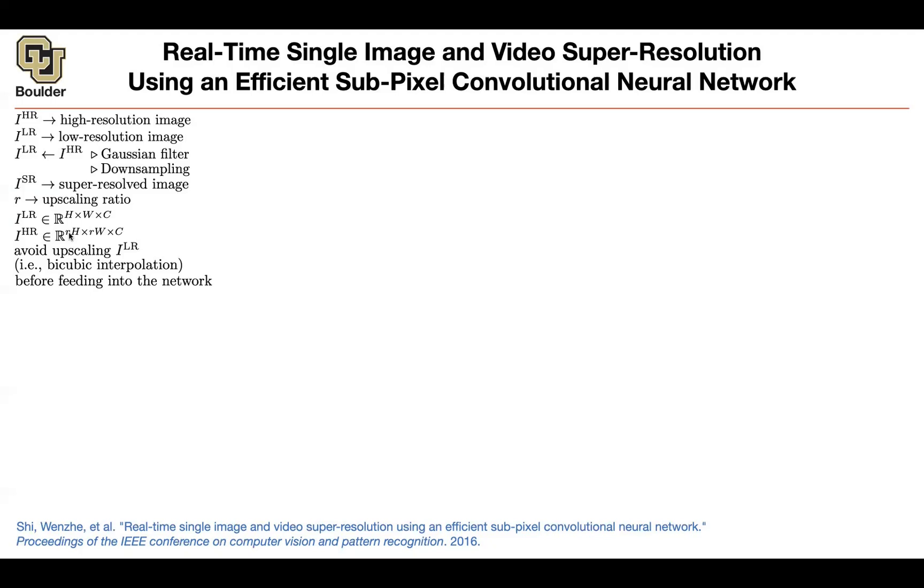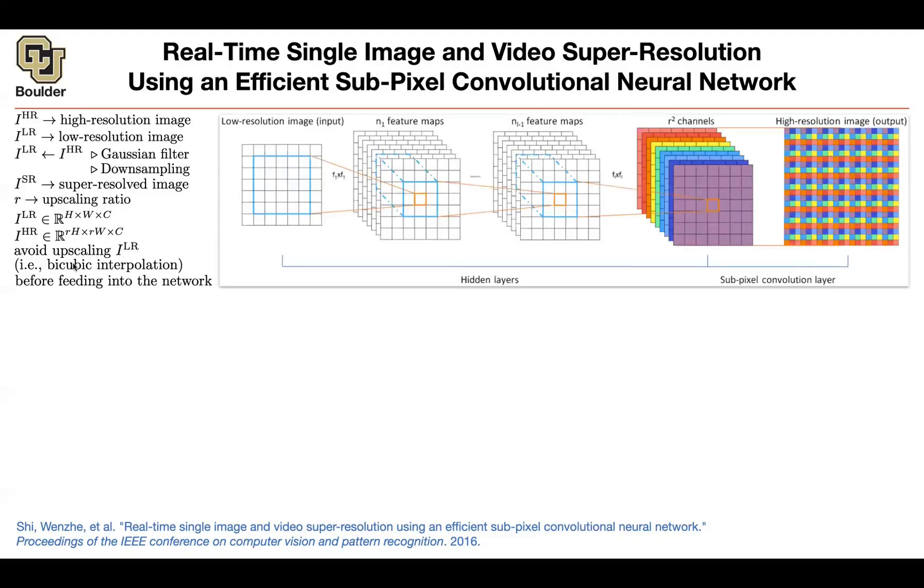The big idea here is don't do that. Don't use bicubic interpolation right away on your image. Postpone it until the later layers in your neural network, or get rid of bicubic interpolation altogether - use convolutional operations.